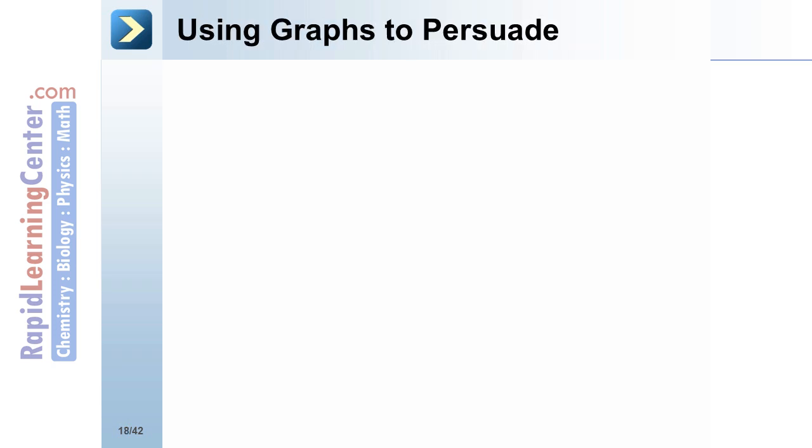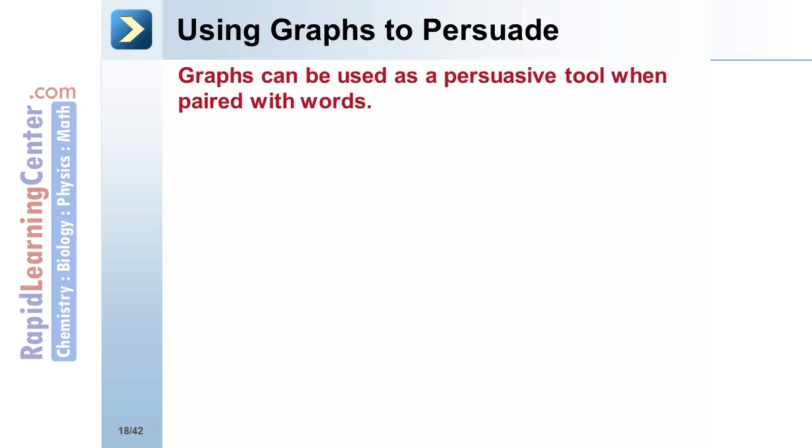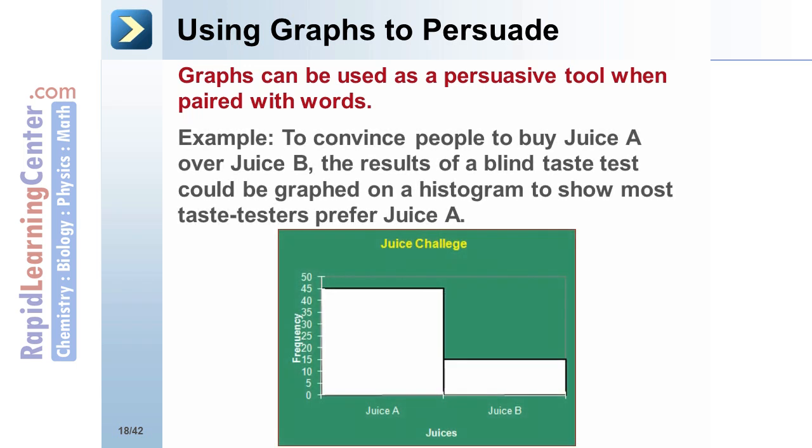Using graphs to persuade: Graphs can be used as a persuasive tool when paired with words. For example, to convince people to buy juice A over juice B, the results of a blind taste test could be graphed on a histogram to show most taste testers prefer juice A.